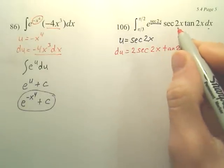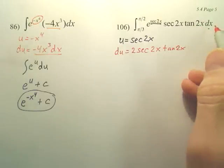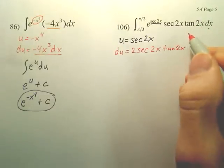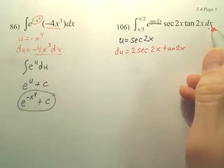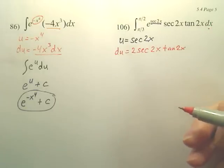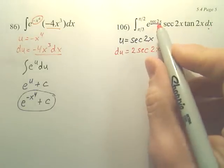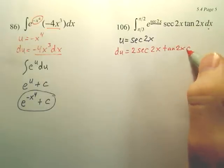The reason it's secant u tangent u, u prime. So you've got to kind of be careful. The inside has to be derived again, due to the chain rule. So be very careful. Do the chain rule of u right here, dx.